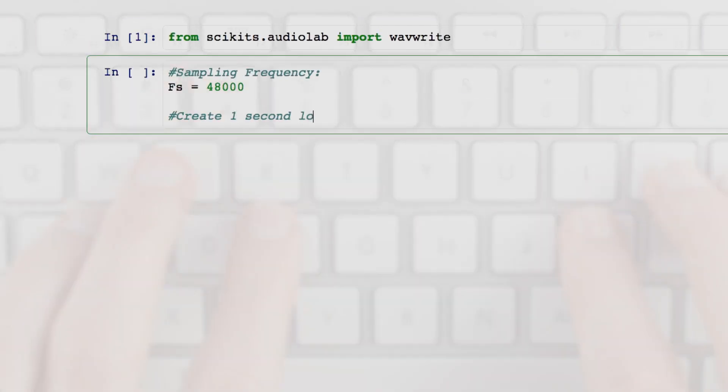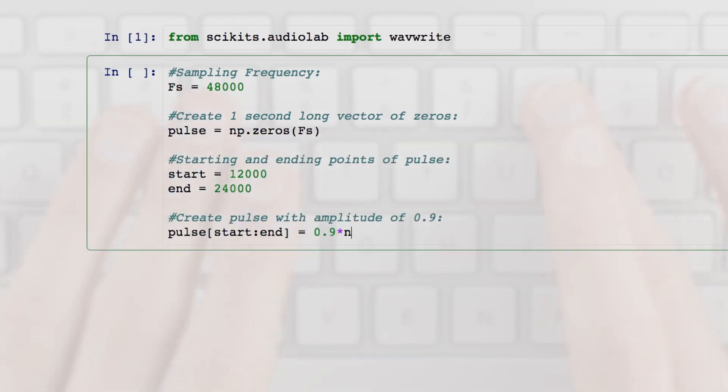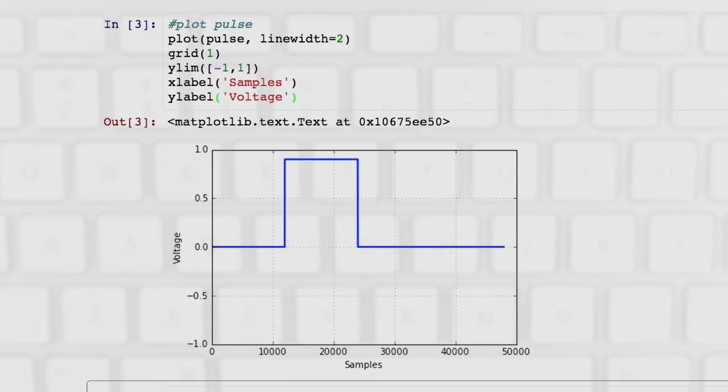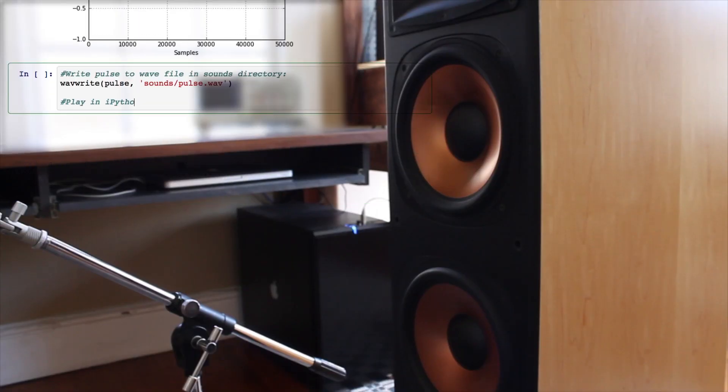We'll write some code in the programming language Python to generate a signal to send through the air. To keep things simple, we'll use a pulse. We'll write our pulse to a WAV file and play it through a speaker.